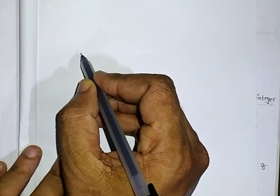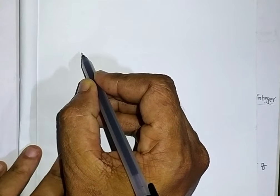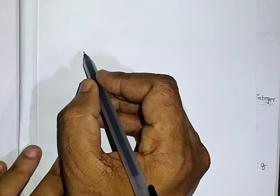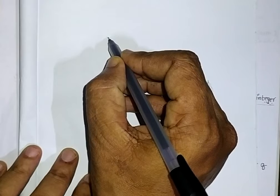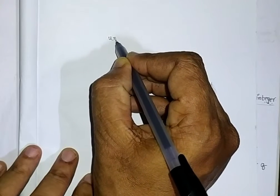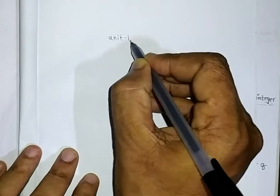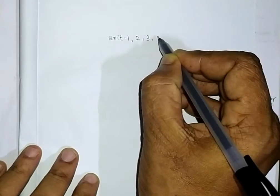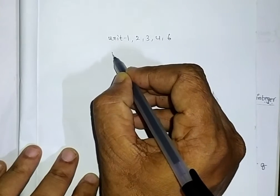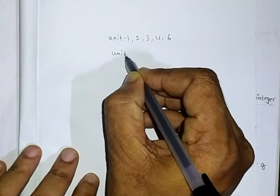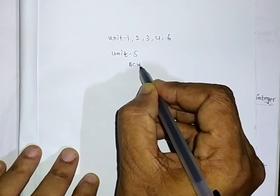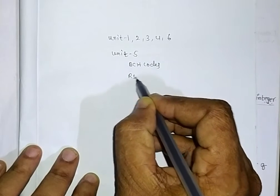In this class, I am going to discuss the basic things associated with the Galois field. In the regular classes, we studied units one, two, three, four, and six. The remaining unit is unit number five, which is about BCH codes and RS codes.